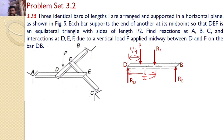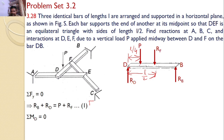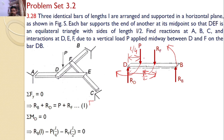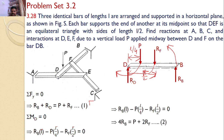Now let us apply the equilibrium equation. The first equilibrium equation, sigma F_Y = 0, means RB + RD = P + RF. This is equation number 1. Taking moments about point D: P introduces a clockwise moment, RF introduces a clockwise moment, and RB introduces a counterclockwise moment. Hence I can write RB × L − P × L/4 − RF × L/2 = 0. Upon simplification, I get 4RB = P + 2RF. This is equation number 2.